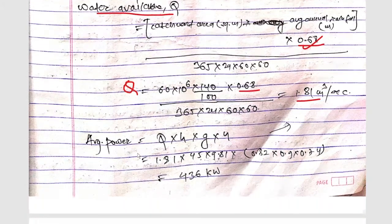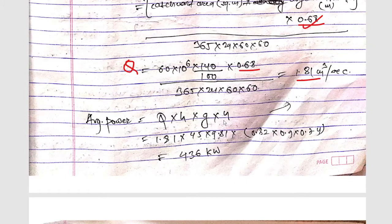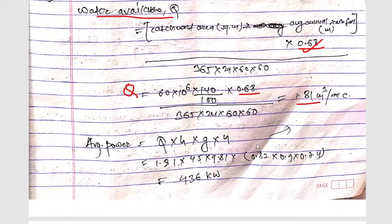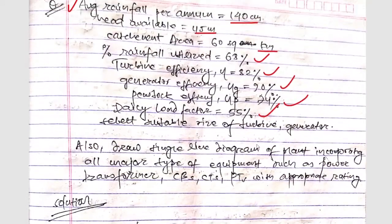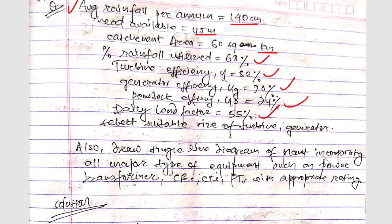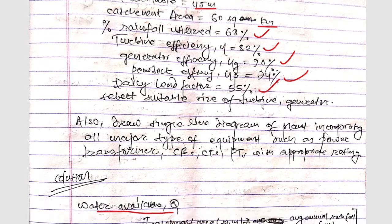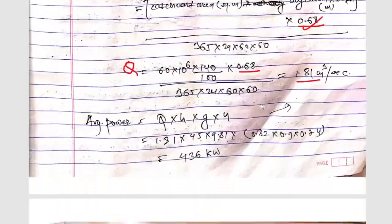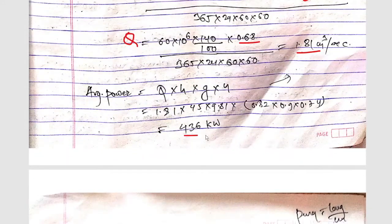Now average power will be Q into H into G into efficiency means Q is 1.81 and the head is given as 45 meters and G will be 9.81 into 1. Here we have given the efficiency of turbine, efficiency of generator and penstock efficiency, so 0.82 into 0.9 into 0.74. So we'll get here average power as 436 kilowatt.